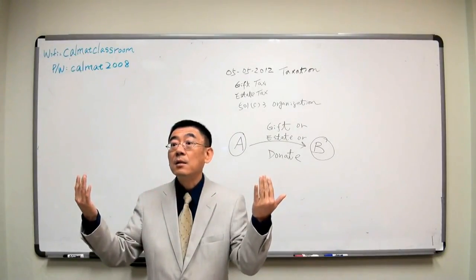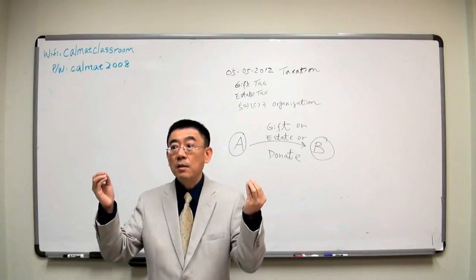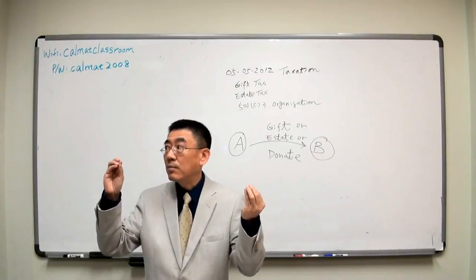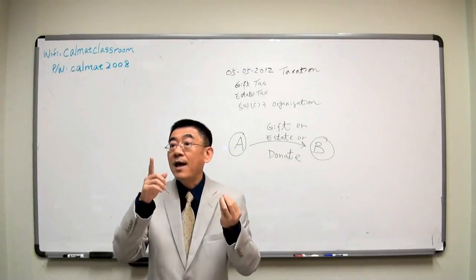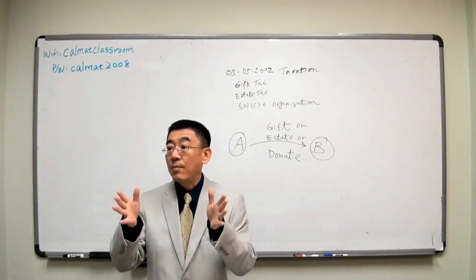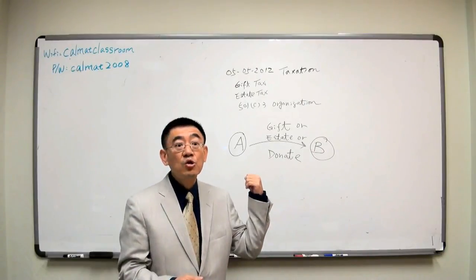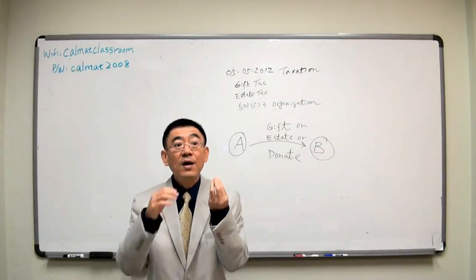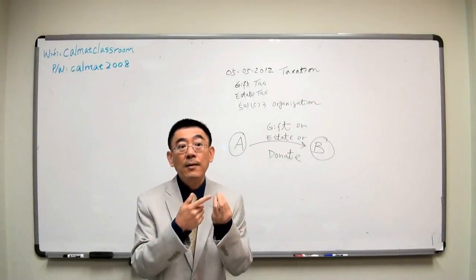For disposition, the asset from A to B, however B needs to pay something back to A. So this like a sales or exchange. So if the asset from A to B, but in the meantime B pays something back to A, that is asset disposition, then you need to think about capital gain or capital loss.